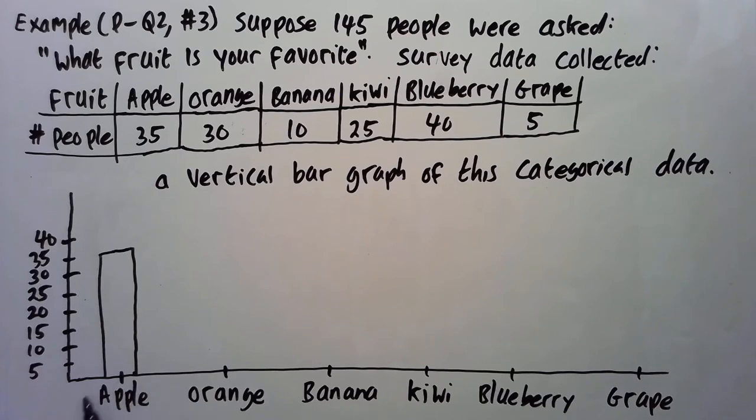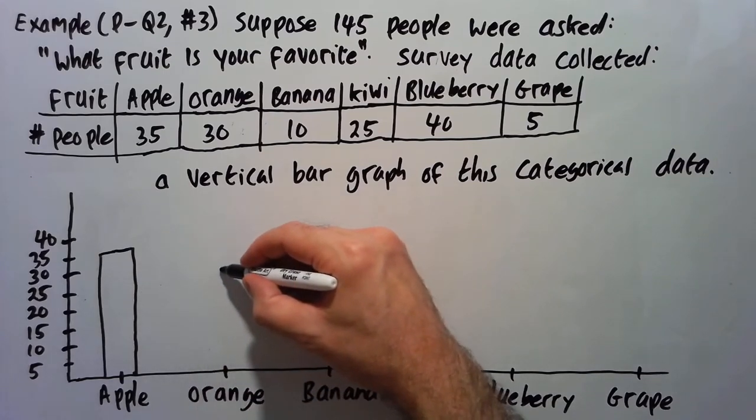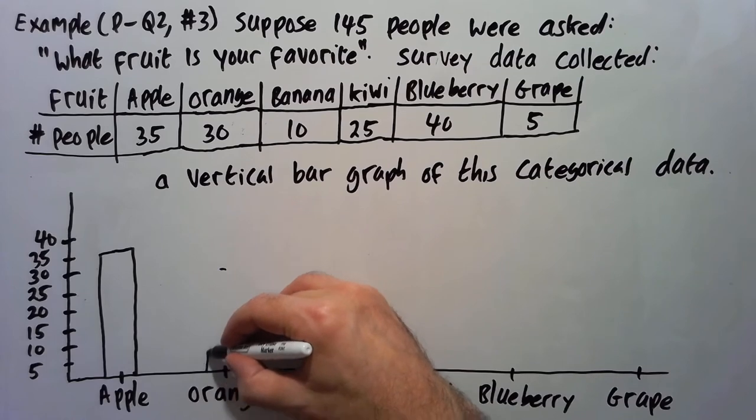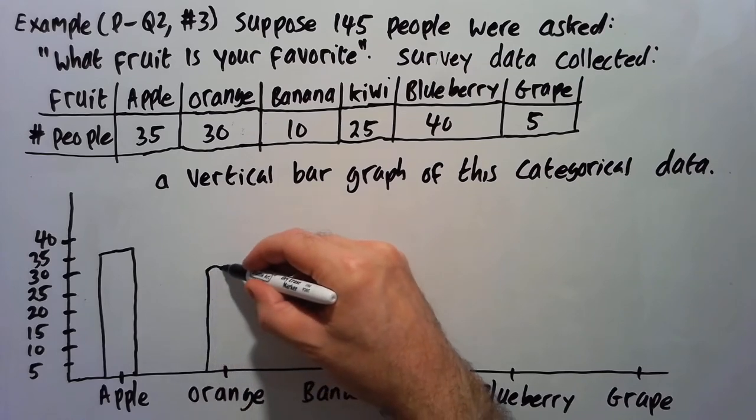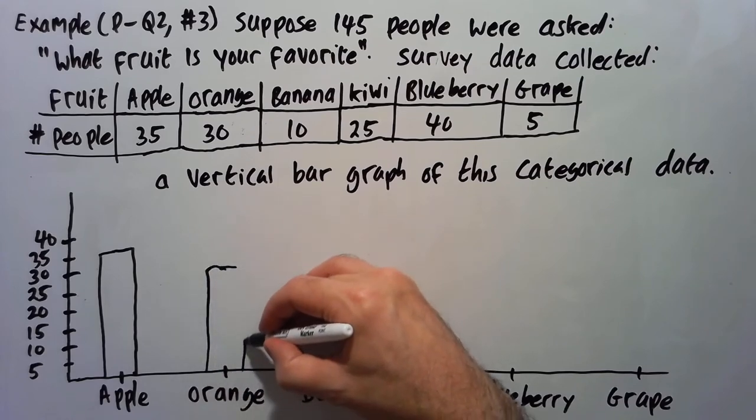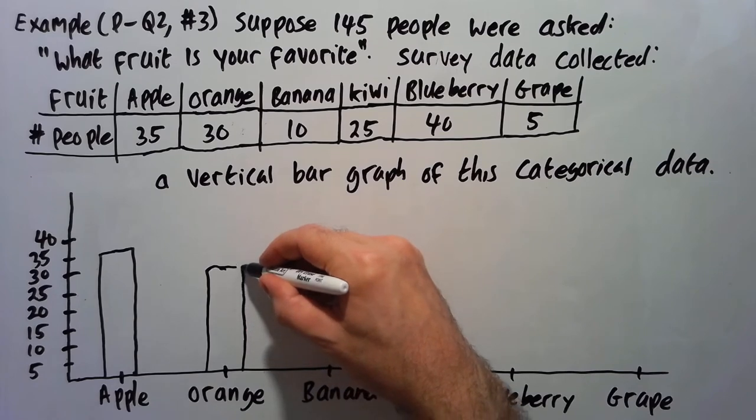Because, again, on the x-axis these are just labels. They're not bins. Okay, then orange is 30. So 30 is here. So another rectangle. And make all the rectangles about the same thickness. So it looks nicer.